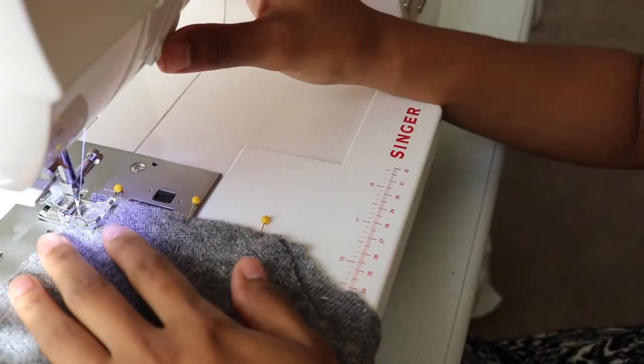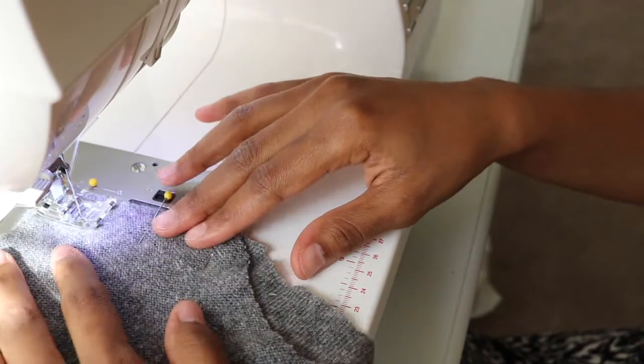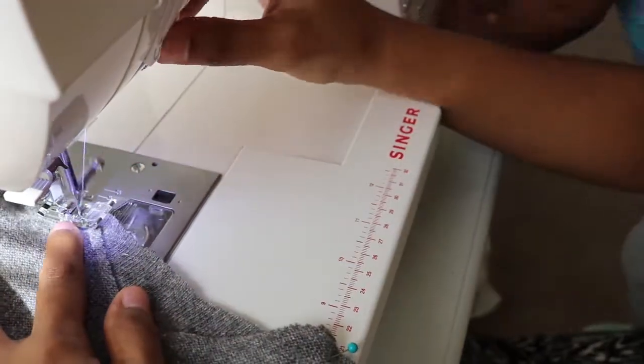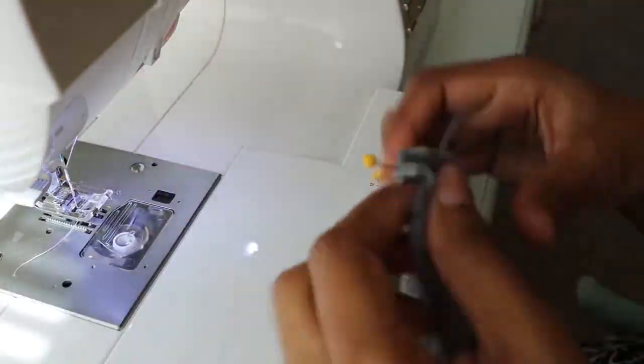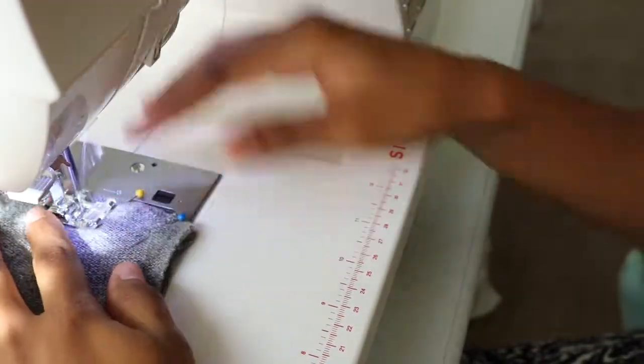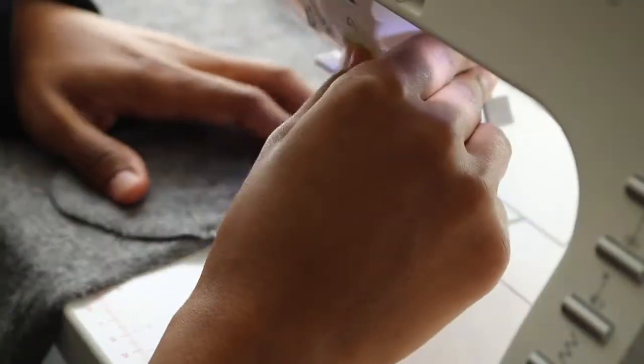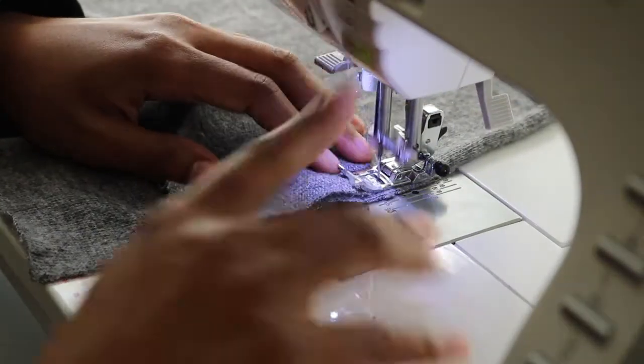Now I'm ready to sew. And I went ahead and set my sewing machine on a zigzag stitch. Anytime you're working with knits or any kind of fabric that has stretch to it, if you don't have a serger it's best to use a knit stitch or a zigzag stitch so that you can avoid your thread popping and be able to keep that stretch in your garment whenever you wear it. So just keep that in mind.